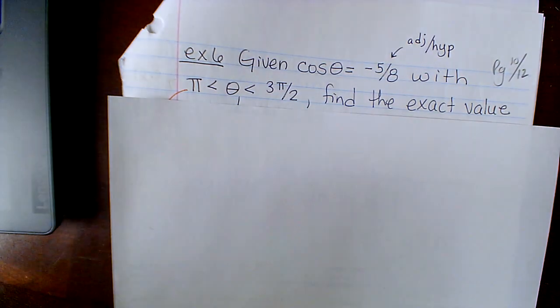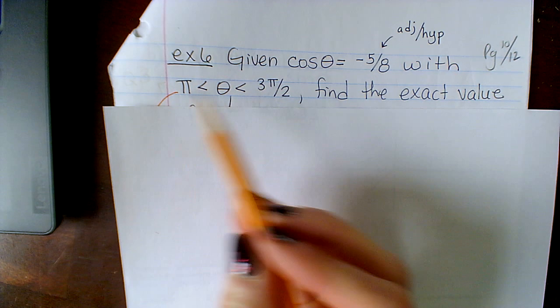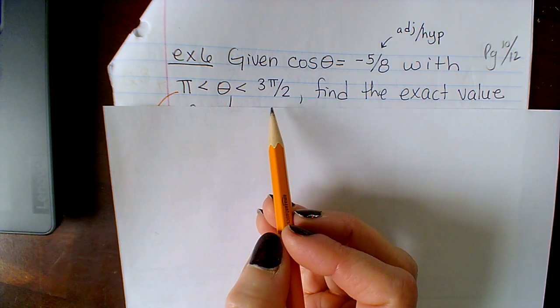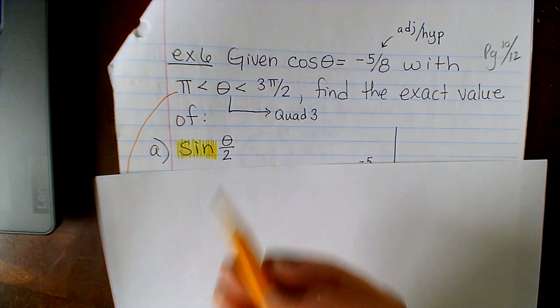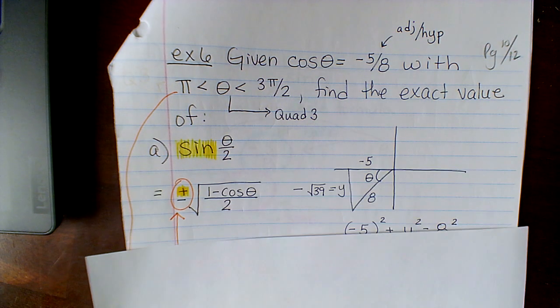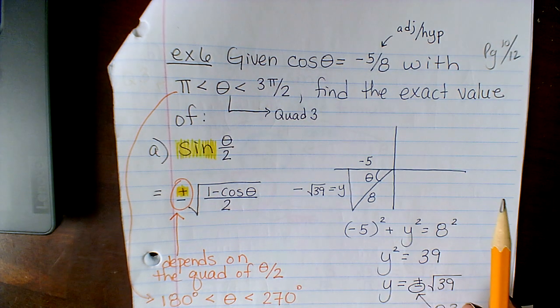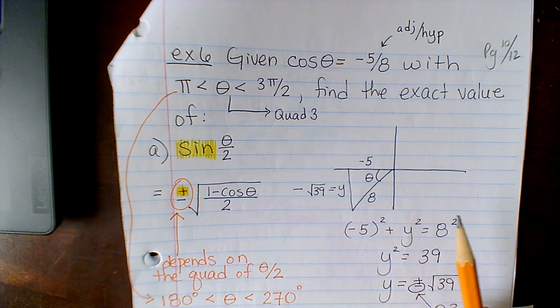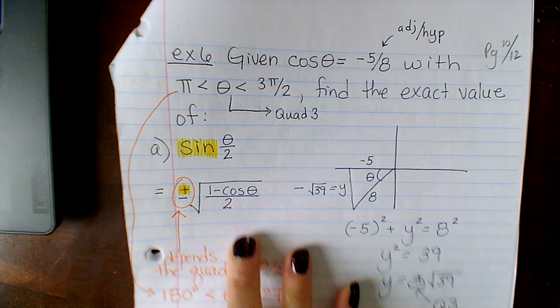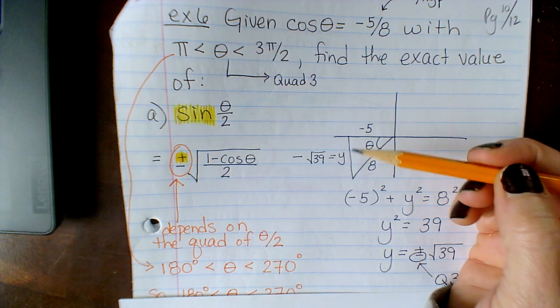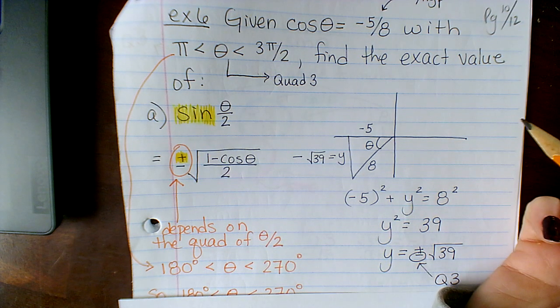All right, so these should look somewhat familiar. We've seen these before in previous sections. So I'm giving you that cosine theta is negative 5 eighths, and I'm telling you that theta is between pi and 3 pi over 2. That's whispering sweet nothings to you and telling you which quadrant this is going to be in. And we want to find the exact value of sine theta over 2. This is telling you quadrant 3. So with theta being in quadrant 3 and the cosine being negative 5 eighths, we know that that cosine is adjacent over hypotenuse. So adjacent hypotenuse. We're going to use the Pythagorean theorem to solve for y. So I get that y is plus or minus the square root of 39. Now, how do I know which one to use? Well, because this is quadrant 3, this y value down here is going down, so it's negative. So that's a negative root 39.